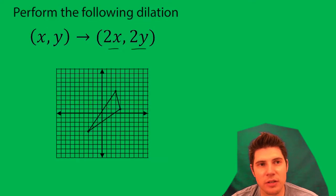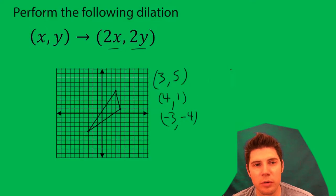So the way that we do this is we mark the three points of the triangle, which are these, and then with these three points we're going to go through the transformation, the dilation, and it's defined up here 2x, 2y.